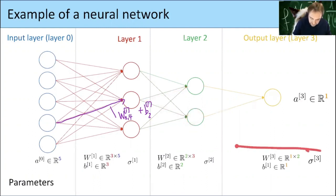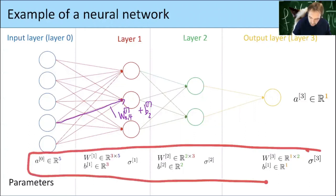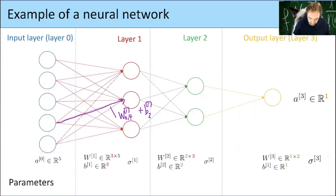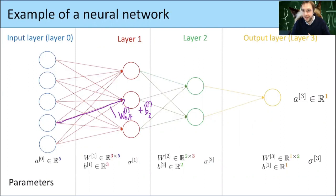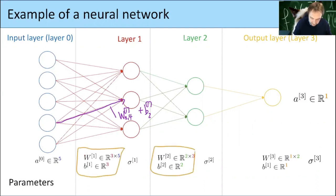All these weight values and biases are our parameters — the activation functions are fixed from the beginning as part of the network architecture — and these numbers are what we want to find when we train the neural network.